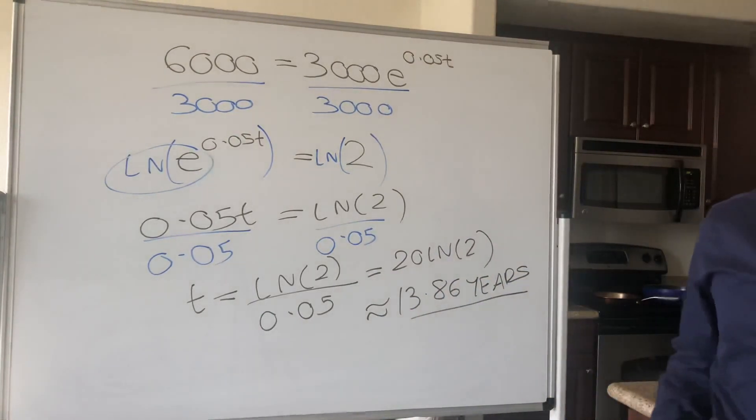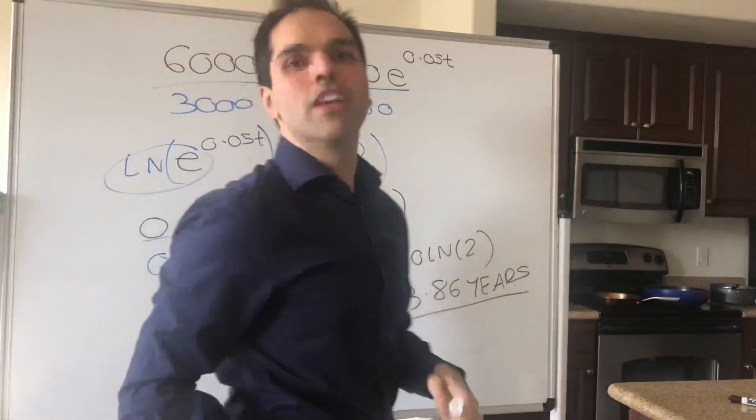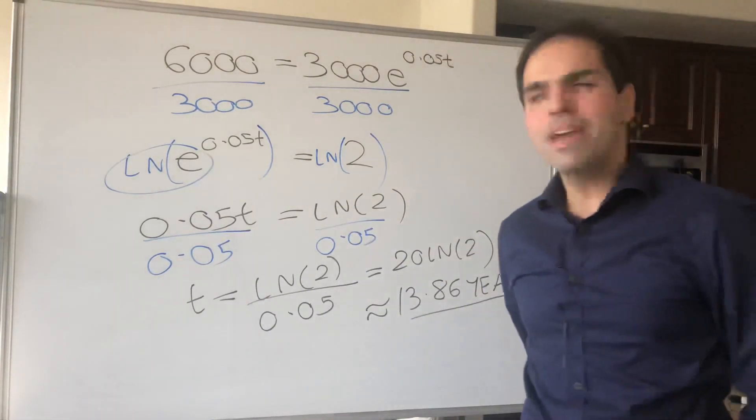So in the end, it would take you roughly 13.86 years for your money to double.